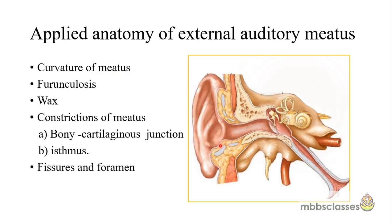Because hair follicles are present only in the outer cartilaginous part, furunculosis will affect only the outer one-third of the meatus. The two constrictions — the bony-cartilaginous junction and the isthmus, 5 mm from the tympanic membrane — are the narrowest points. Any wax, foreign body, or debris collected beyond these constrictions requires careful management during removal.